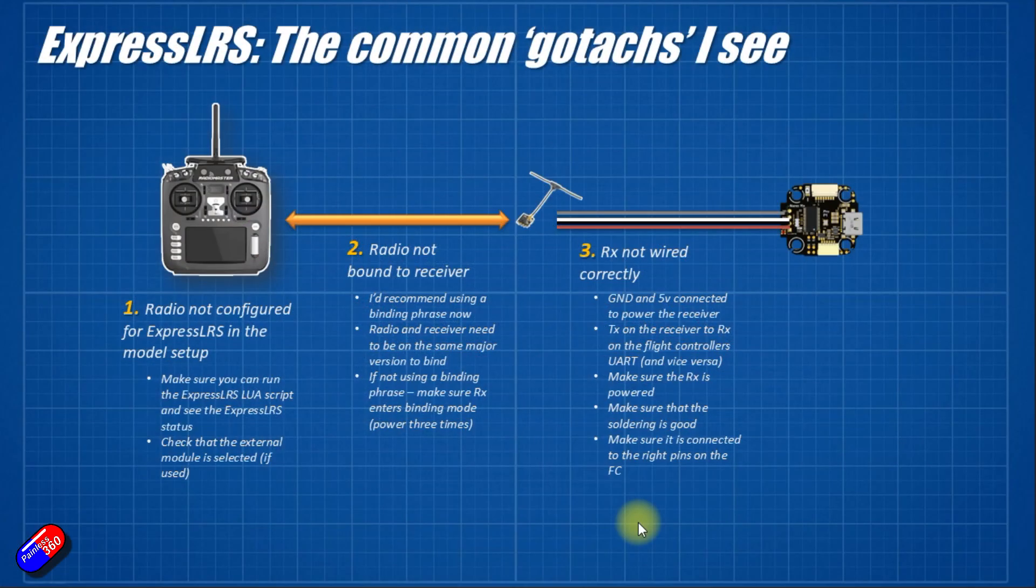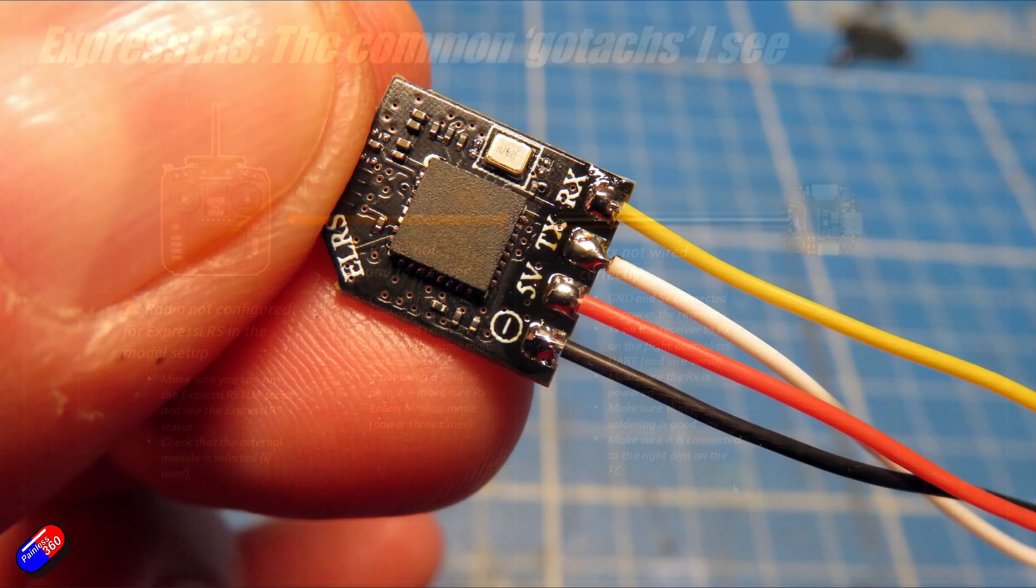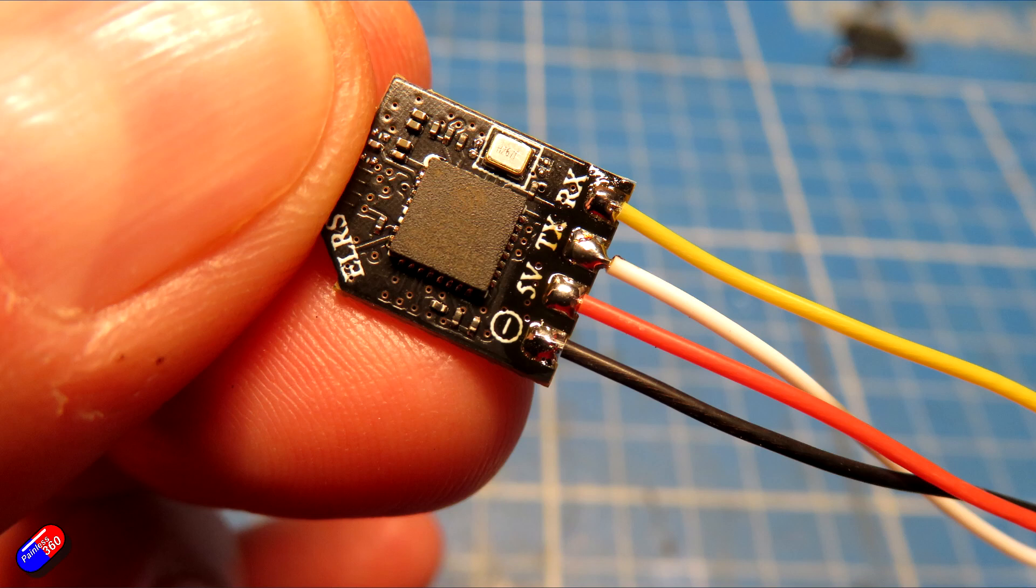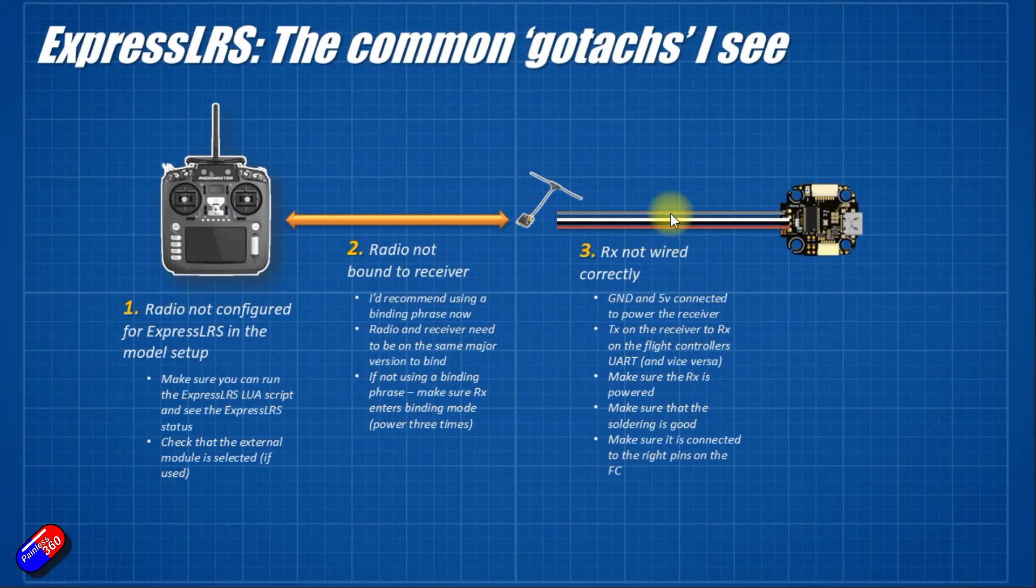So what that means is that these four wires need to be connected correctly to a UART on the flight controller. That means the ground and five volts need to go to a ground and five volt pin on the flight controller. And crucially, the transmit pin that's here on the RP1 needs to go to the receive pin on the flight controller and vice versa. Think of it like the transmit pin being somebody talking and the receive pin being somebody listening. So you want the talking pin talking to the listening pin and vice versa.